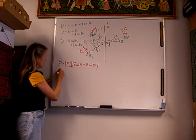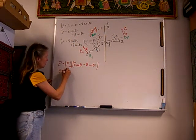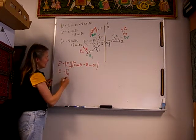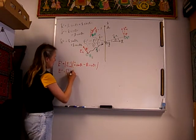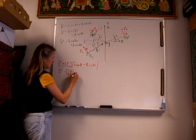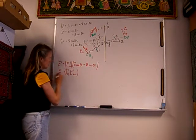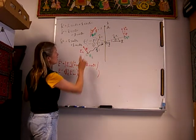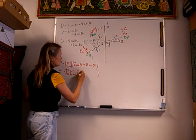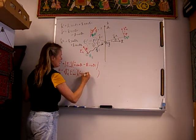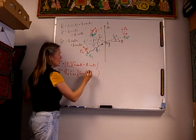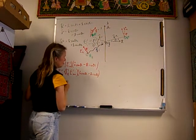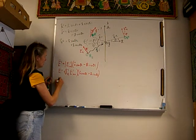Let's write the reflected electric field. That's going to have a magnitude equal to the reflection coefficient for the parallel case times E incident. The polarization has an x component of cosine of theta i and a positive z component of sine of theta i.